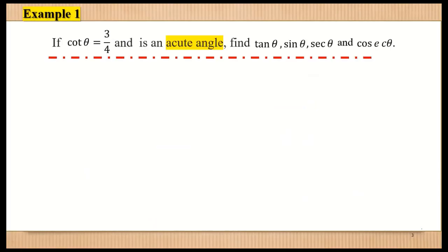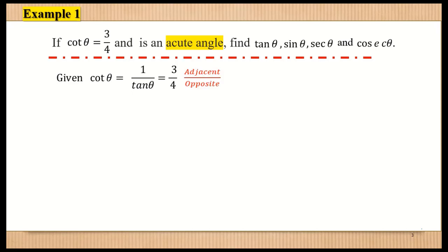For example, if cotangent theta equals 3 over 4 and theta is an acute angle, find tangent theta, sine theta, secant theta, and cosecant theta. Cotangent theta is equivalent to 1 over tangent theta, which is adjacent over opposite.